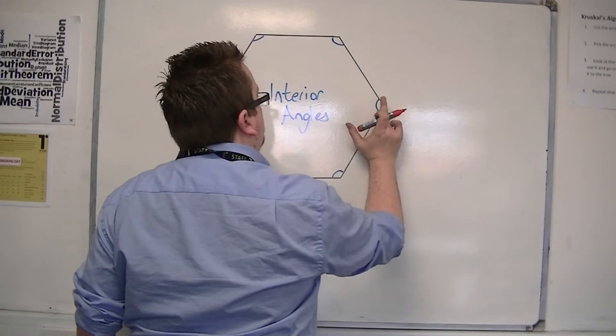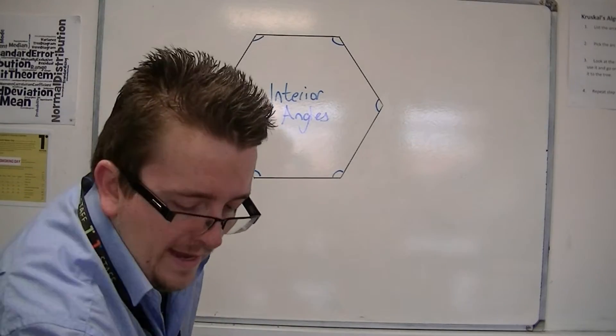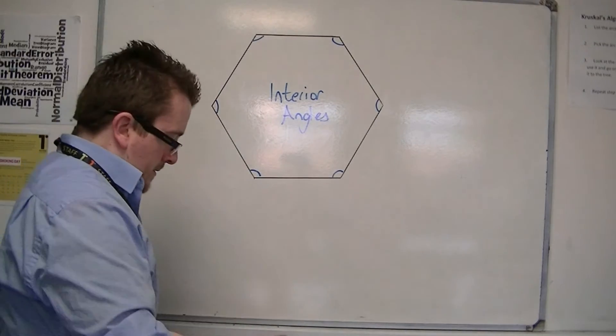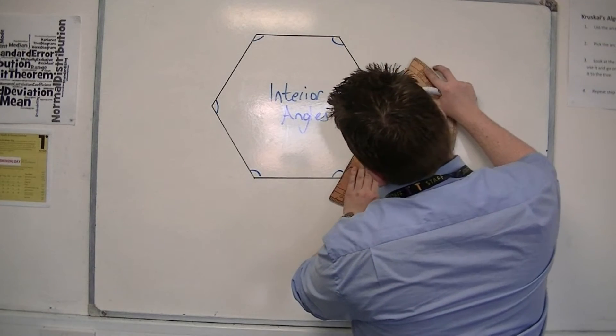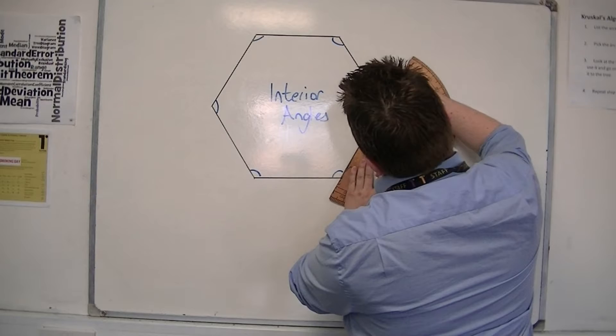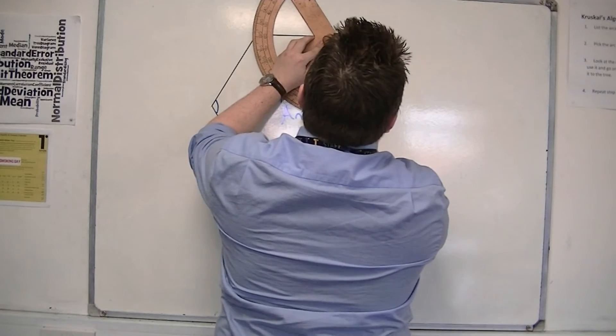The exterior angles are found by extending each of the sides of the hexagon. So if I extend it somewhat, like so.